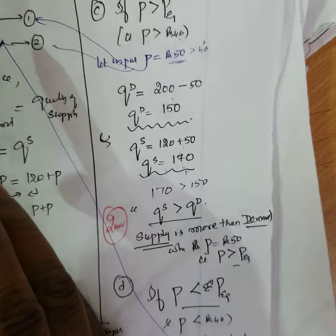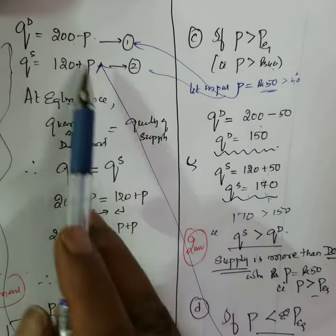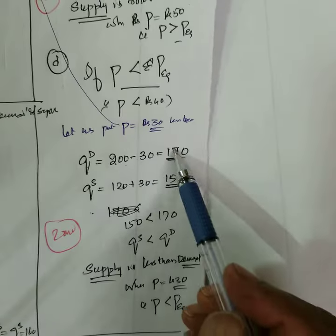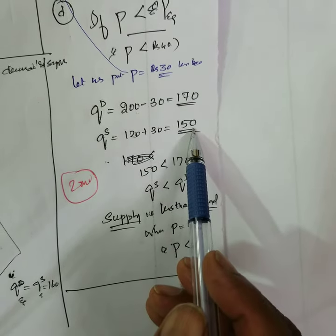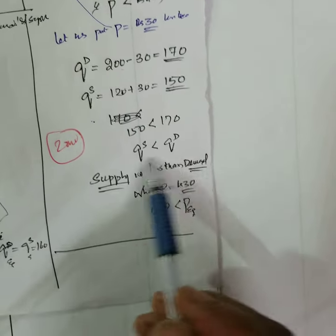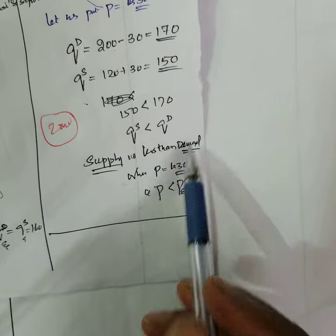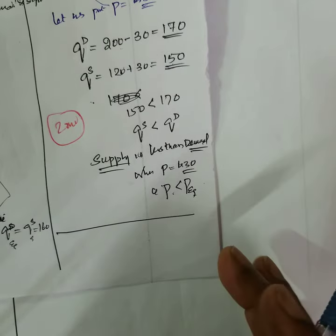You substitute here only again. You substitute here, you will get what, different quantity. Demand is 70, supply is only 40. More demand, less supply. Therefore supply is less than demand, that's all.